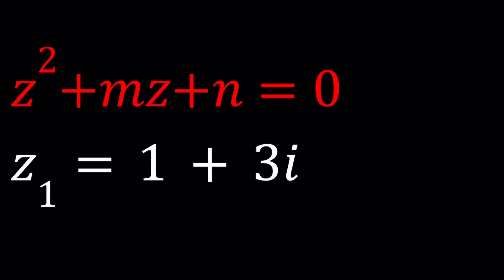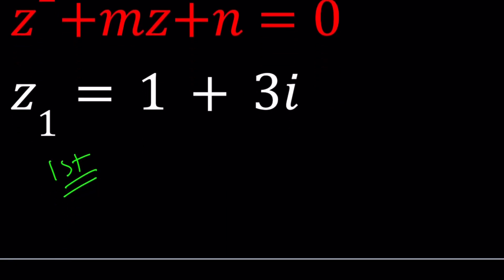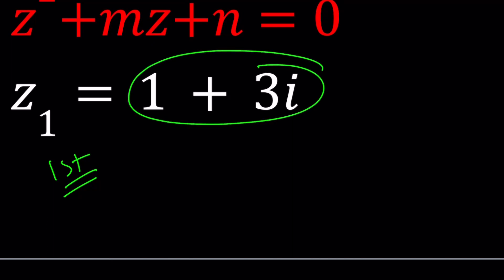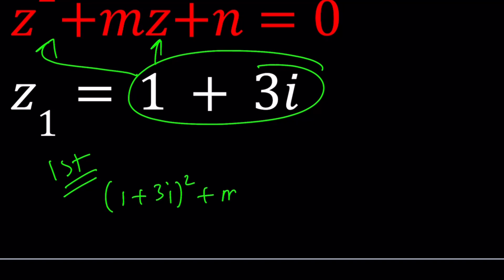Let's start with the first method. Since we are given a solution to this equation, I'll just plug it in. So let's replace z with 1 plus 3i everywhere, since that's a solution.